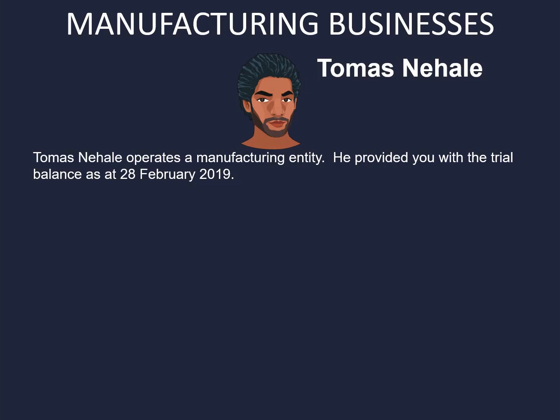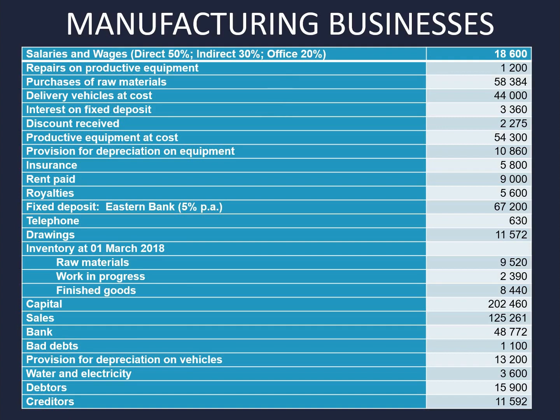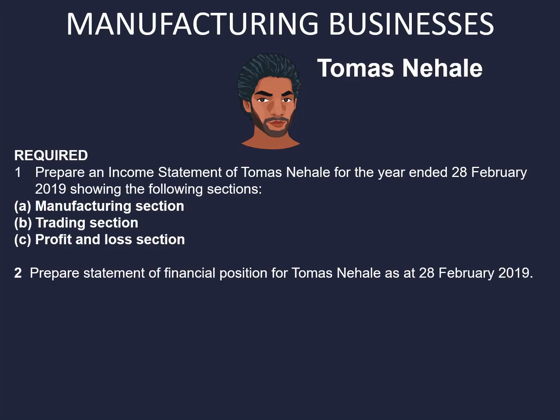Now let's have a look at the following example. Thomas Nahale operates a manufacturing entity. He provided you with the trial balance as at 28 February 2019. Now over here we can see the trial balance. What's required is to prepare an income statement of Thomas Nahale for the year ended 28 February 2019, showing the manufacturing section, the trading section, and the profit and loss section. Then also we need to prepare the statement of financial position for Thomas Nahale as at 28 February 2019.